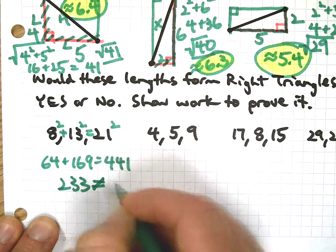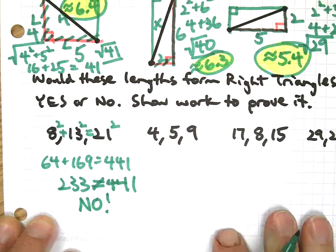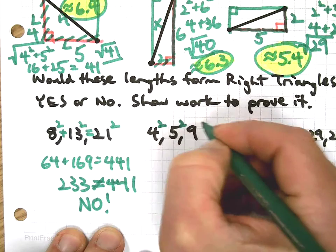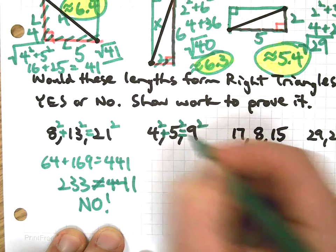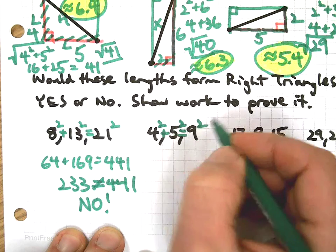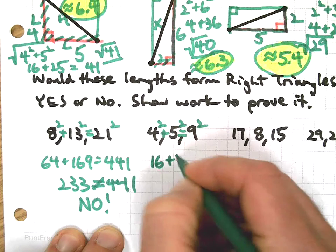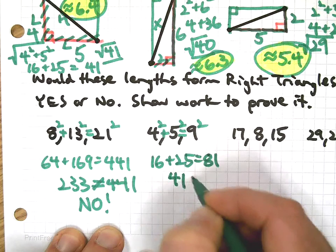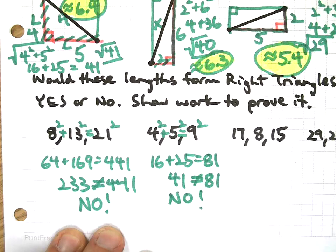That's what - 233 does not equal 441, so that's a no. Next, these are also already in order. We will square them: leg plus leg equals hypotenuse, the squares of them, of course.